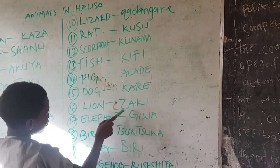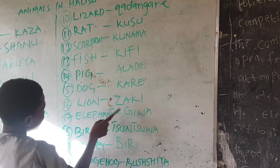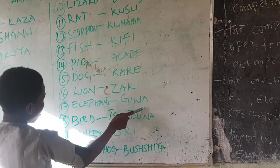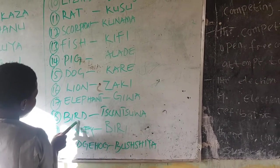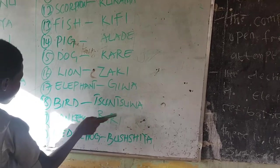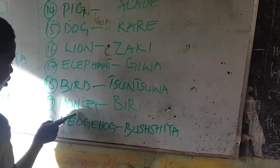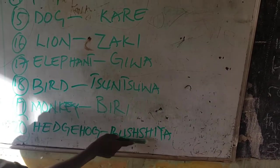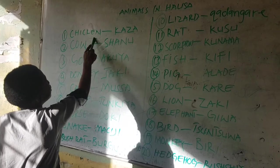Lion, zaki. Elephant, giwa. Bird, sunsua. Monkey, biri. Hedgehog, bushia.